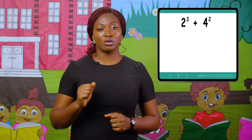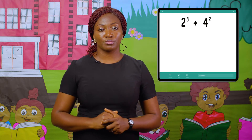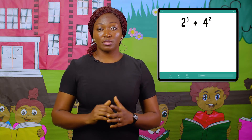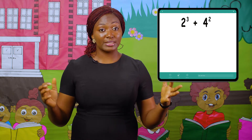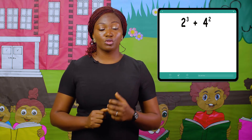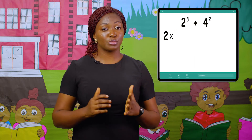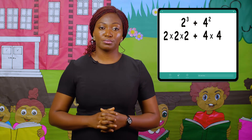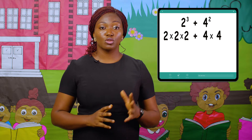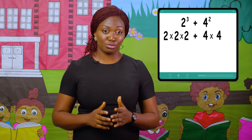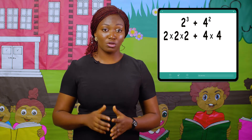Given 2 raised to the power of 3 plus 4 raised to the power of 2, the first thing we do is to expand the question. 2 raised to the power of 3 means 2 times 2 times 2. 4 raised to the power of 2 is 4 times 4. So we have 2 times 2 times 2 plus 4 times 4.